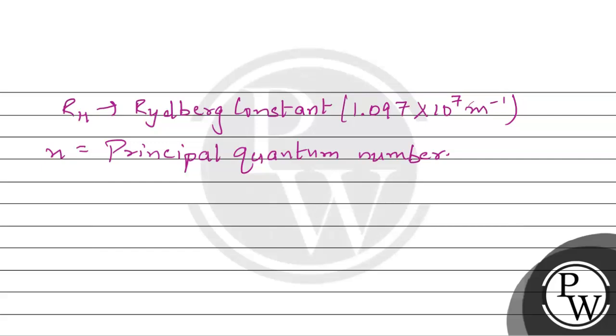तो यहां पर जो wave number है, that is mu bar, that is inversely proportional to the wavelength. तो अब हमें shortest wavelength transition बताकर करनी पड़ेगी. तो अब हम question explain करेंगे.